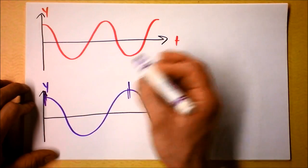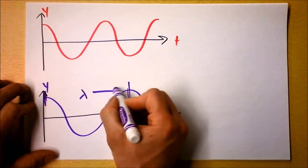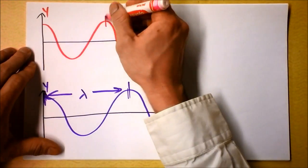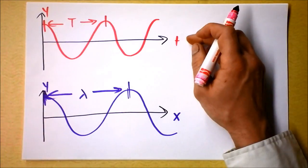And so we could talk about this distance right here. It's a distance because it's over x. This distance over here is the wavelength. And we could talk about this up here between here and here. That seems to be a time because this is a graph of time and that's the period.